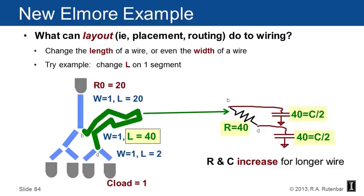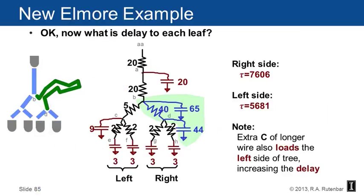Now it's got a right side and a left side. Let's ask the question, what's the delay to the leaves? Between node AA and A, there's still a resistor of size 20. From A to B, a resistor of 20. But now from B to D, a resistor of 40, as opposed to from B to C, a resistor of 5. That green wire is longer. The capacitor at node B got bigger, it's now 65. The capacitor at node D got bigger, it's now 44. This tree's not symmetric. If you run the Elmore delay formula down the right hand side, you're going to find the delay 7606. If you run it down the left hand side, you're going to find it's 5681. I'm not surprised that the delay got bigger on the right hand side because the wire is longer. I am perhaps surprised that the delay got bigger on the left hand side.